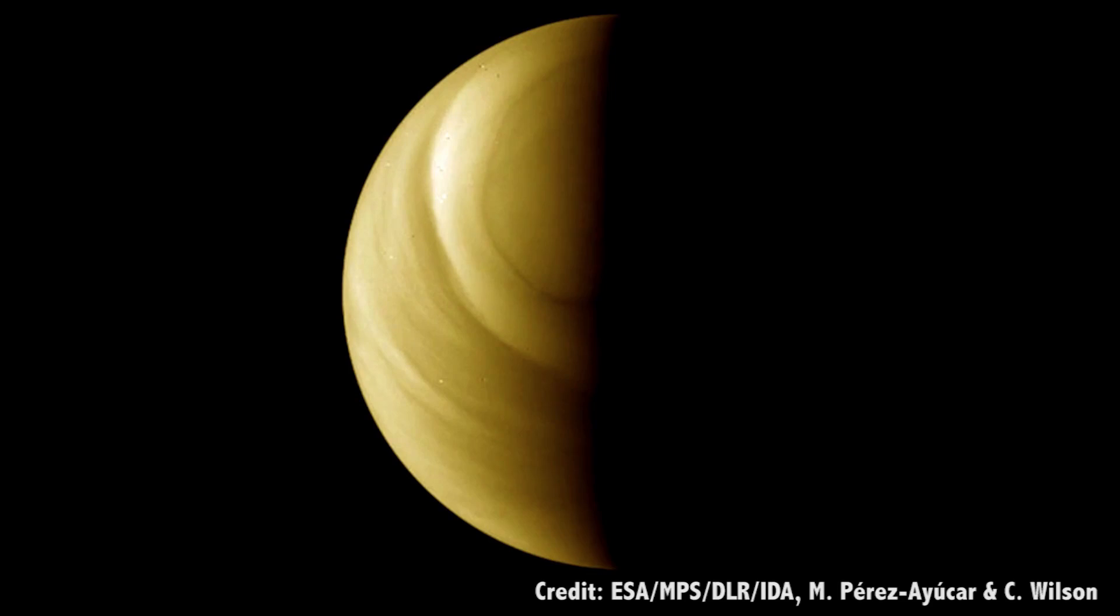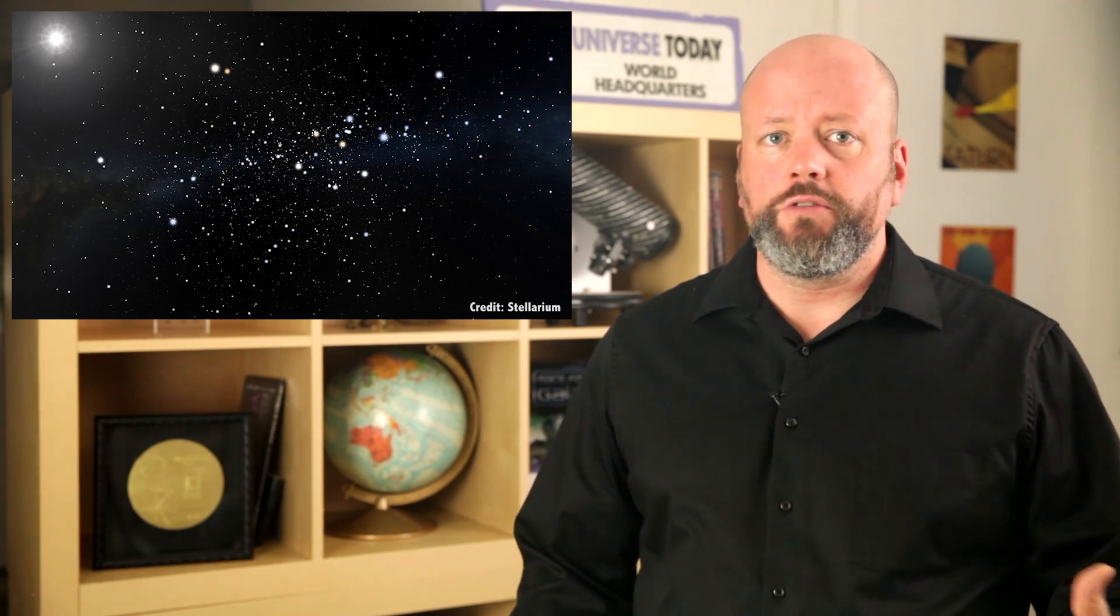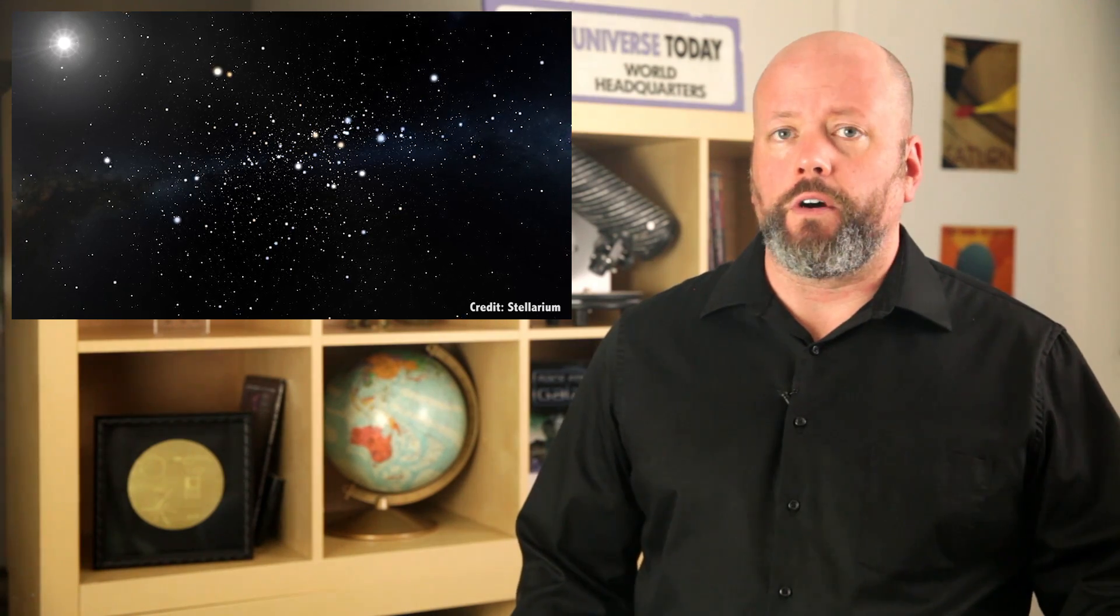Venus is, of course, the second planet from the Sun. But for the vast majority of human history, nobody really understood what it was. I mean, it's easy to see in the sky, even if you live in one of the most light-polluted cities on Earth. Ancient civilizations tried to grapple with what they were looking at, and of course, they assumed there was something supernatural going on.